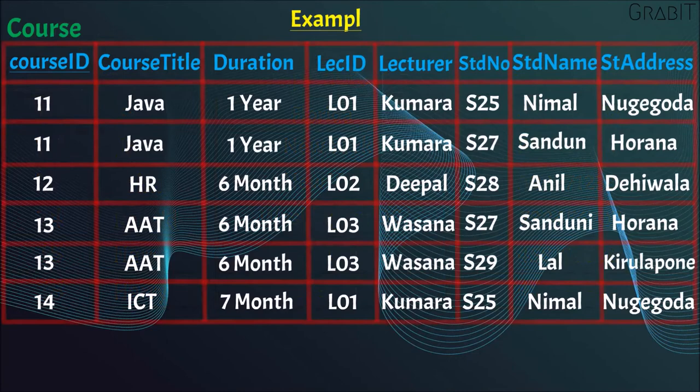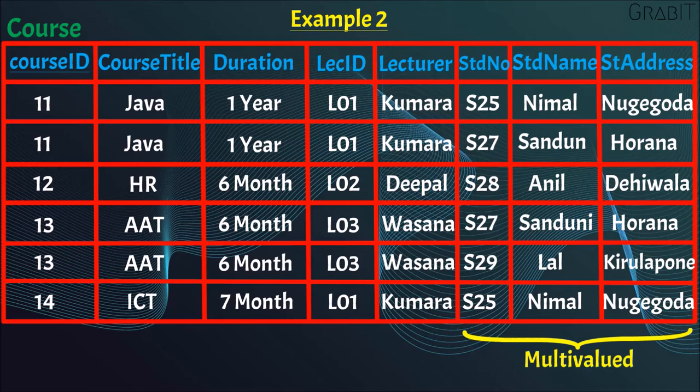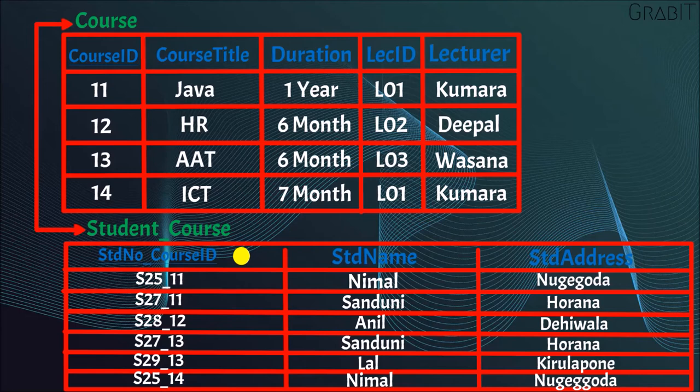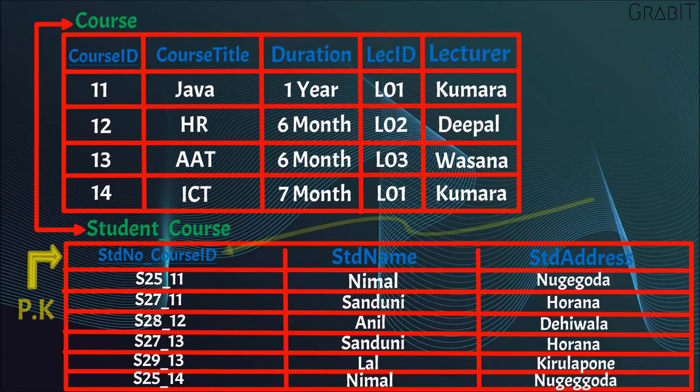Take a look at this example. In this table, Student Number, Student Name, and Student Address fields are multi-valued attributes. When applying First Normal Form, we must remove them and create a new table named Student Course. To make a relation between the Course Table and the Student Course Table, we take the CourseId attribute into the Student Course Table. This also reduces data redundancy. We take CourseId and Student Number as the composite primary key in the Student Course Table.